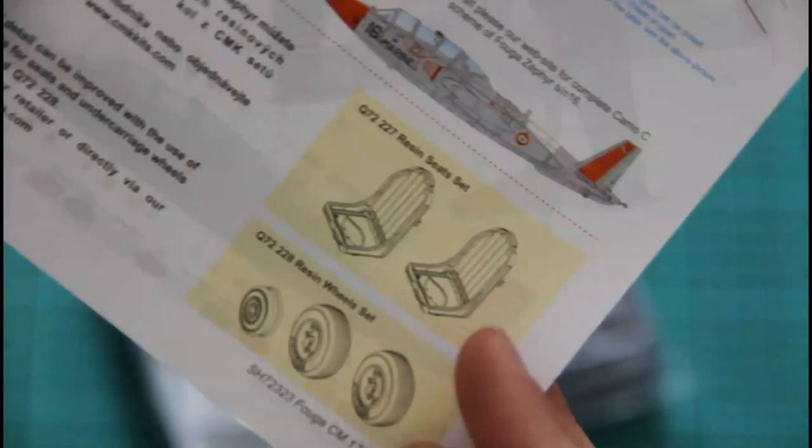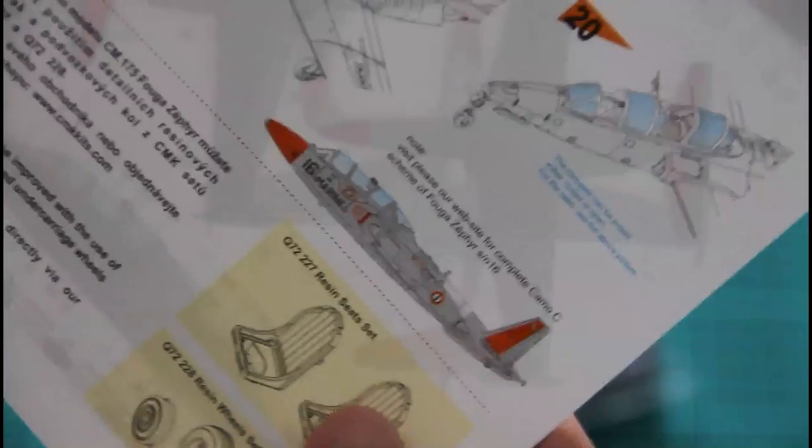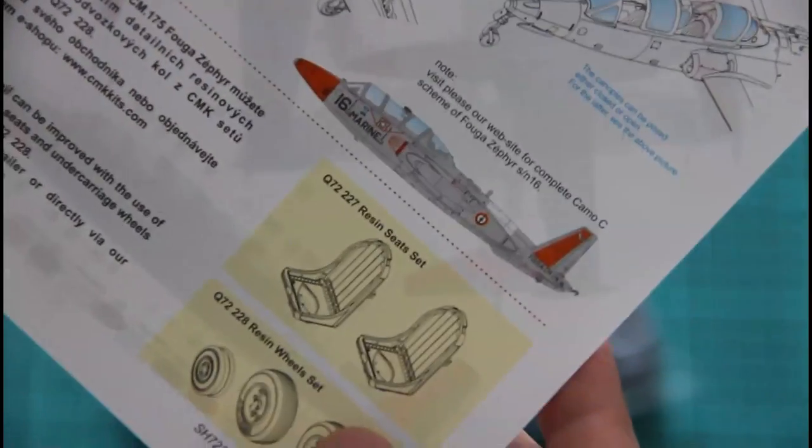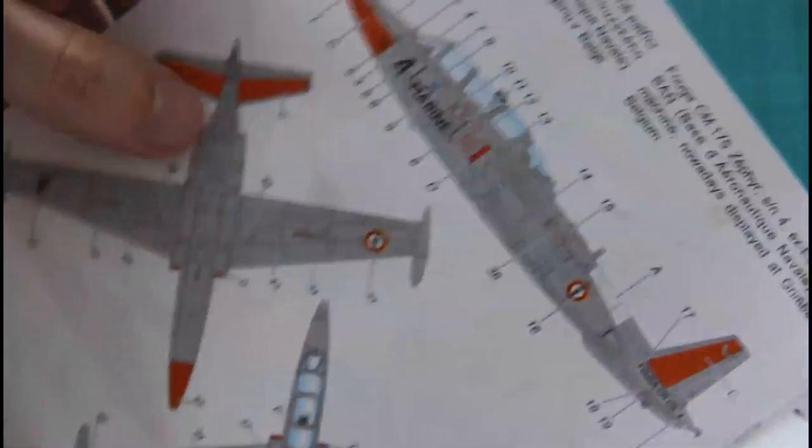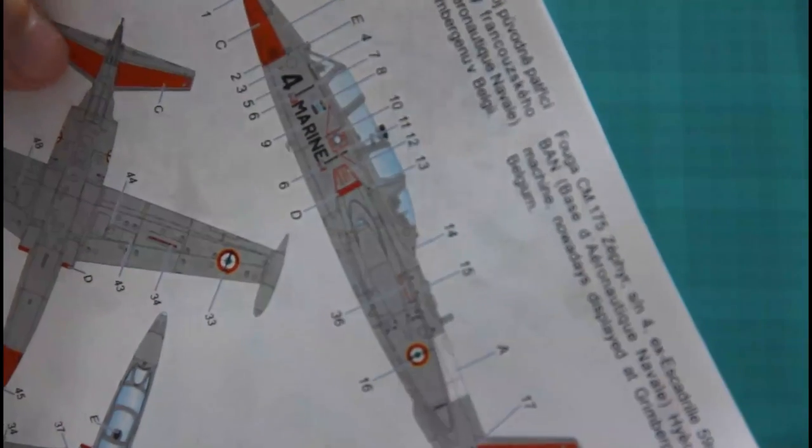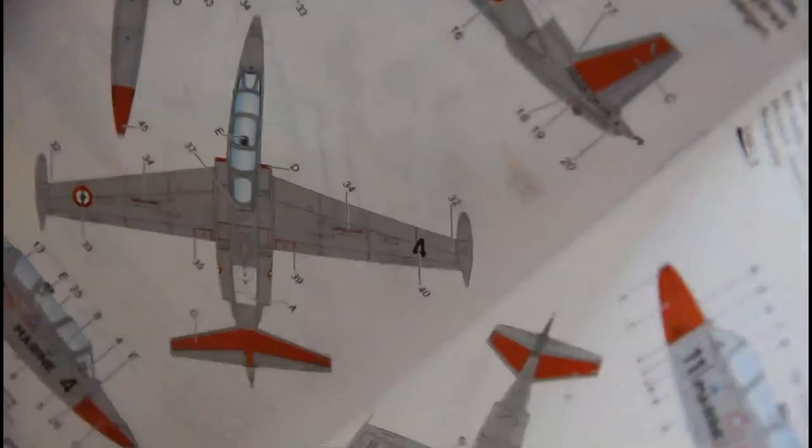Masks are not provided, but there are some resin accessories available for this model. As you can see, resin seats and resin wheels. Marking options are given on the last pages: one, two, three. I just wonder how come only three versions are shown there. Nevertheless, don't be afraid because all four marking options are displayed on the back side of the box as we saw before.